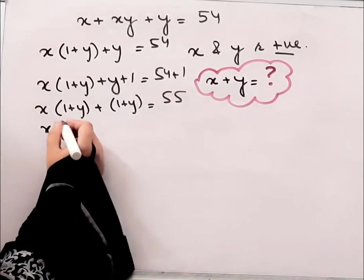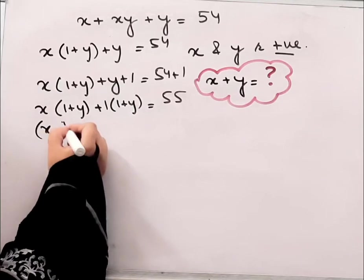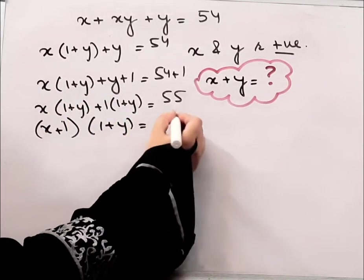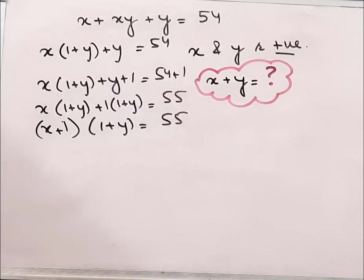So it can be written like this: (x plus 1) times (1 plus y) equals 55.